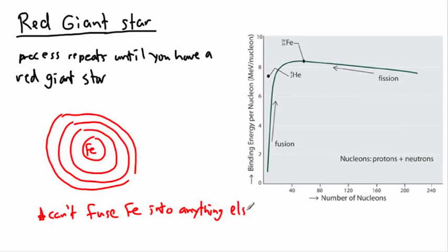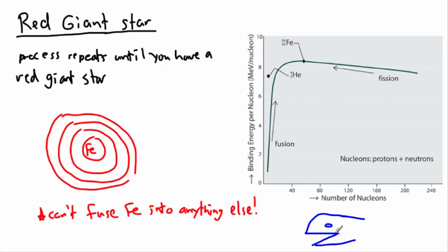You might wonder why it can't fuse iron. If you look at the binding energy per nucleon — where nucleons are protons plus neutrons — there's a really important graph in atomic physics. I call it 'the whale' because of the shape of the curve: it rises, peaks, and curves back down, a bit like the outline of a whale.